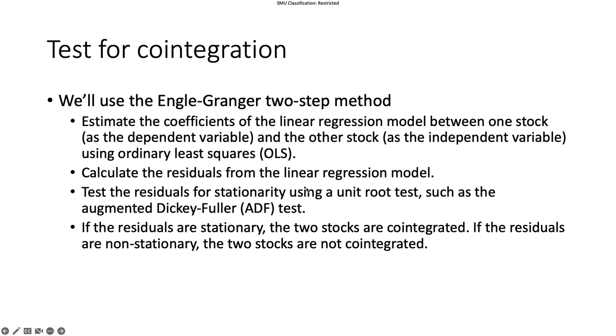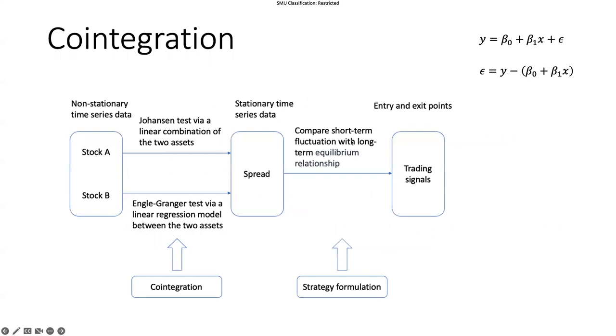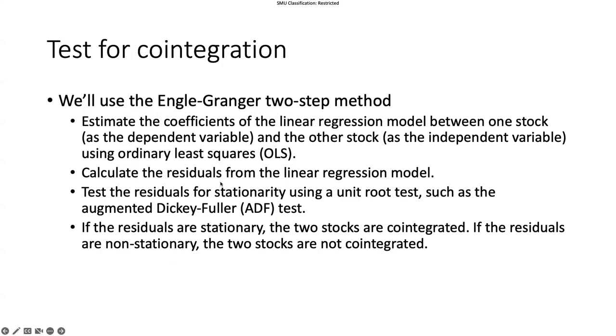Then we calculate the residuals from the linear regression model. Remember, we calculate the residuals by just shifting the terms: use the true value of the dependent variable minus the prediction, and the difference gives us the residuals. Based on the residuals as a time series, we can test for the stationarity of the residuals using a unit root test. Unit root means auto-correlation of degree one - to assess if the current point is very much correlated with the previous time point. If it is, then this gives us the unit root.